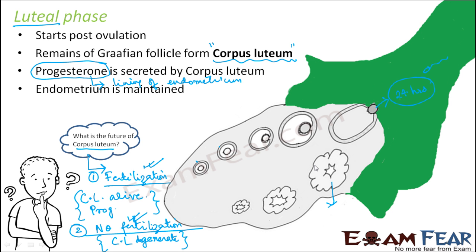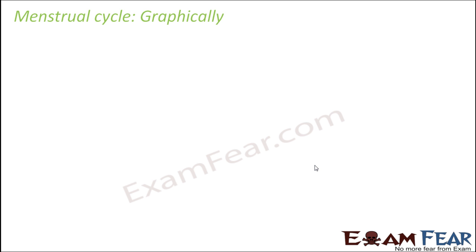I hope you understood the gist of the menstrual cycle. You should be able to connect the different phases of the menstrual cycle because this is very, very important. If you do not understand the entire cycle, you will not be able to understand the exact process of sexual reproduction. If you have not understood, please rewind and watch it again. Now that we have discussed the entire menstrual cycle, let us have a quick graphical look at the whole cycle. When I use the term menstrual cycle, I mean the entire cycle — not just the first stage of menstruation.